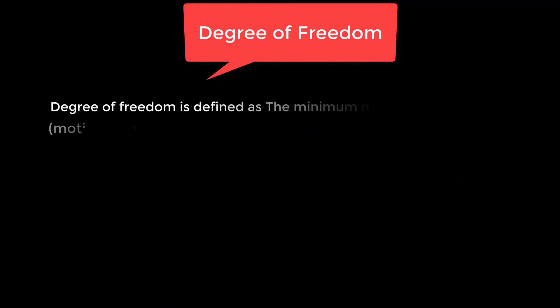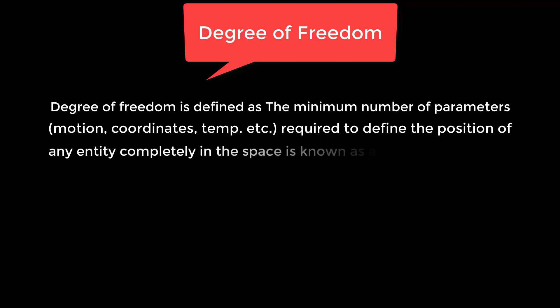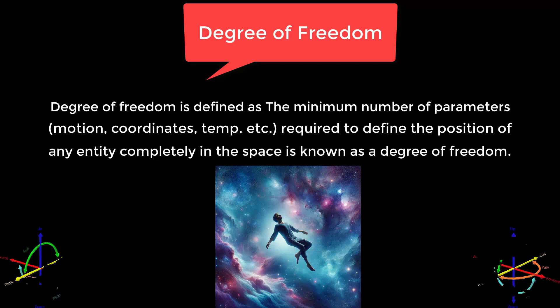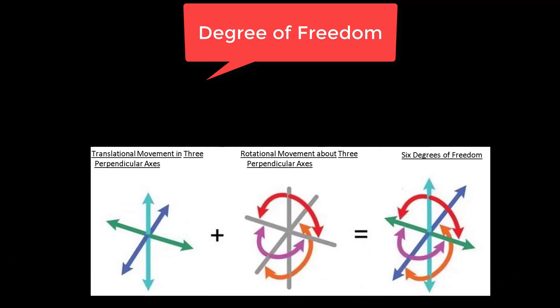Degree of freedom is defined as the minimum number of parameters — motion, coordinates, temperature, etc. — required to define the position of any entity completely in space. Imagine you are floating in space, where you can move in any direction and also rotate as much as you please. The ways you can move and rotate represent your degrees of freedom. Combining the translations and rotations, you get six degrees of freedom — the number that defines the full range of motion for any object in three-dimensional space.